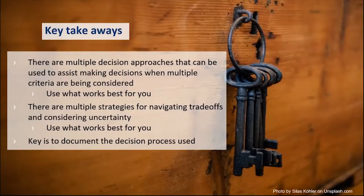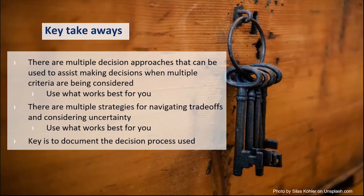We've come to the end of this portion of the session — comparing alternatives and making decisions. Remember that there are multiple decision approaches that can assist in making decisions when multiple criteria are being considered. Use what works best for you. There are multiple strategies for navigating tradeoffs and considering uncertainty. Ultimately, it is critical to have a consistent and systematic approach to support your process of comparing alternatives, addressing uncertainty, and ultimately choosing preferred options. Of key importance is to document your decision process. Transparency is a key underlying principle for the assessment of alternatives process.